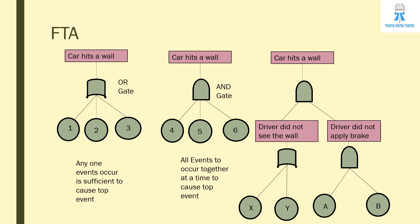Here is a third example. The top event is 'car hits a wall,' and we have an AND gate with two intermediate events: 'driver did not see the wall' and 'driver did not apply the brake.' Since it is an AND gate, both must happen simultaneously. For the intermediate event 'driver did not see the wall,' we have an OR gate — meaning either event X or Y occurring will cause it. For 'driver did not apply brake,' we have an AND gate where both events A and B must happen simultaneously to cause that intermediate event.